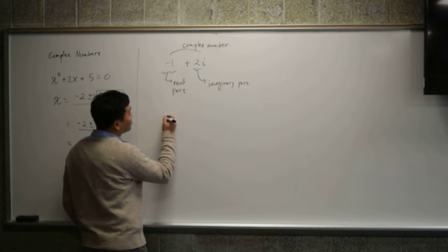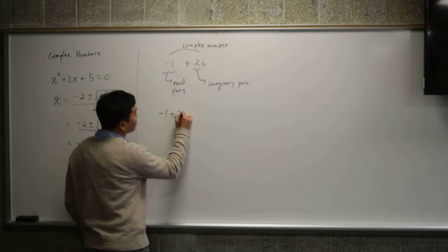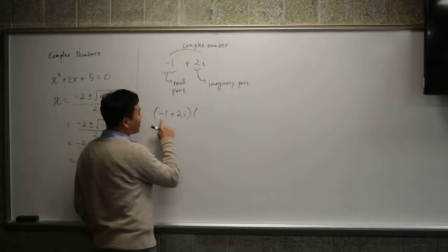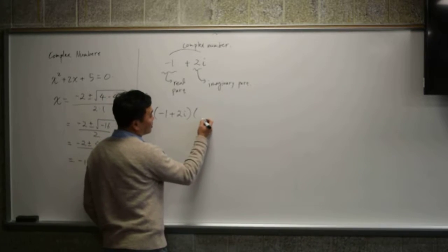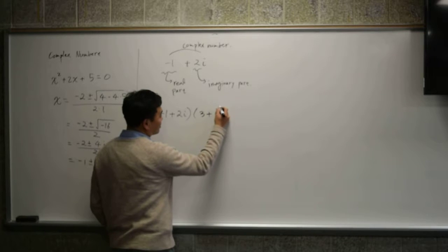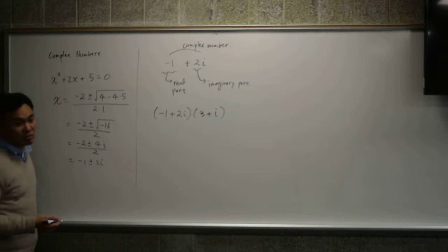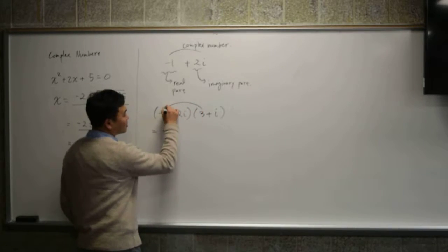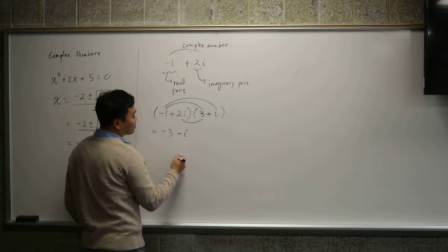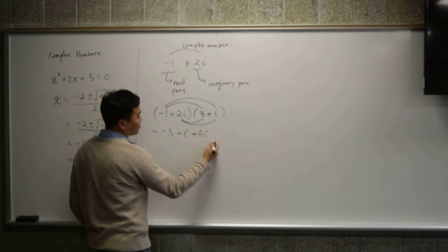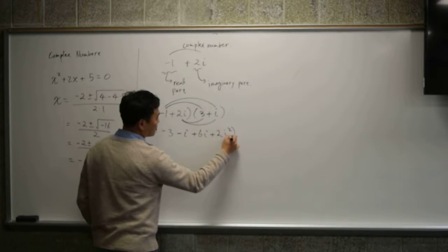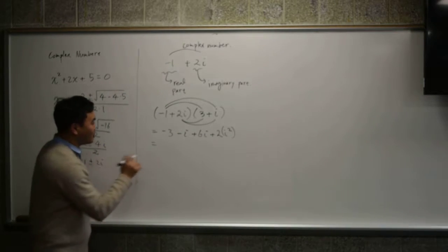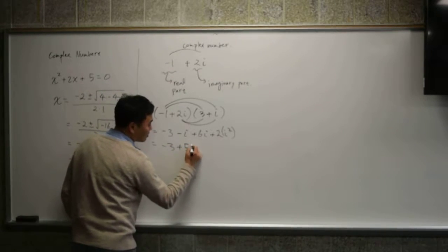Now how do you multiply two imaginary numbers? You just multiply it like you would expand polynomials in algebra. So if you had negative 1 plus 2i and say 3 plus i, if you had something like this and you were asked to multiply them, you would just simply FOIL. First, outer, inner, last. And that's, what is that? Oh. However, there's one difference. There's one difference. See, what is i²?